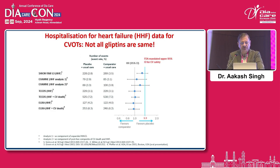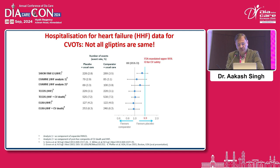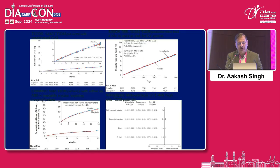Hospitalization for heart failure was, unfortunately, more common in the saxagliptin arm in SAVOR-TIMI, and in the alogliptin arm it was also numerically higher. However, in subsequent trials with sitagliptin and other agents like linagliptin, this was not observed. So, once a patient has a propensity for heart failure, it is better not to use saxagliptin or alogliptin.